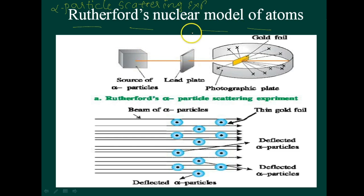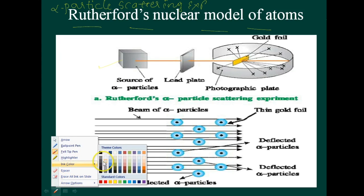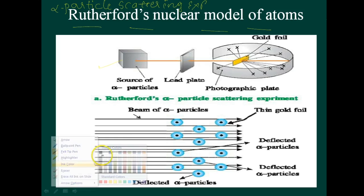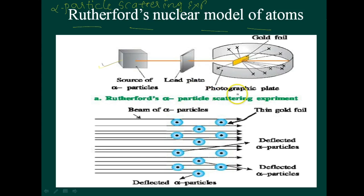As shown in this figure, a stream of high energy alpha particles from a radioactive source was directed at a thin foil, which is about 100 nanometers thick of gold metal. This is the radioactive source, and this is the 100 nanometer gold metal lead plate.